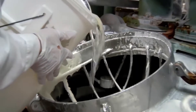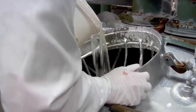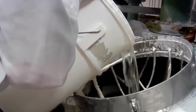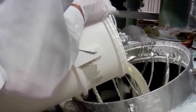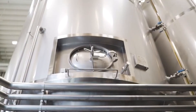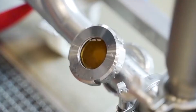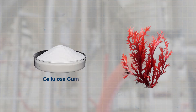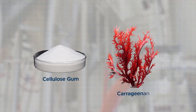Stabilizers and thickeners are included to ensure that the toothpaste maintains its texture and consistency throughout its shelf life. Common stabilizers include cellulose gum or carrageenan.